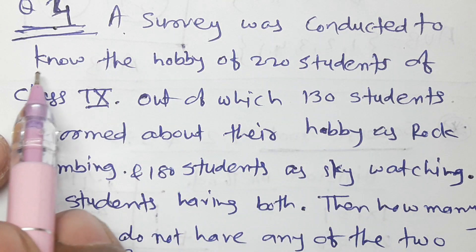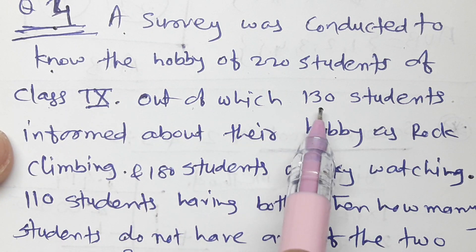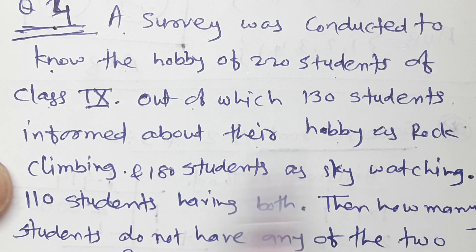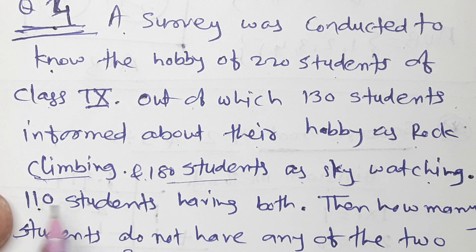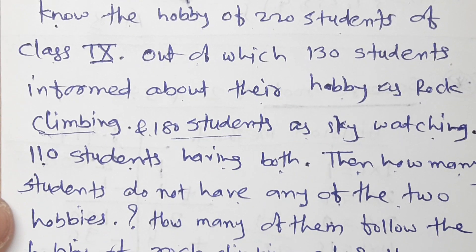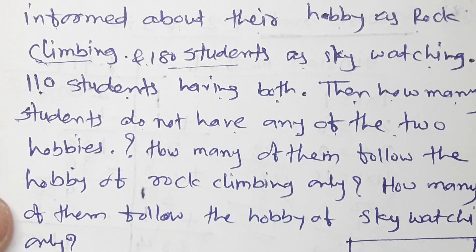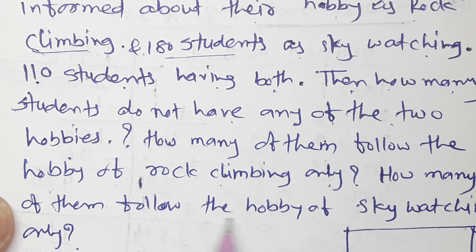Question number 4: A survey was conducted to know the hobby of 220 students of class 9, out of which 130 students informed their hobby as rock climbing and 180 students as sky watching. 110 students had both hobbies. Find how many students do not have any of the two hobbies, how many follow only rock climbing, and how many follow only sky watching.